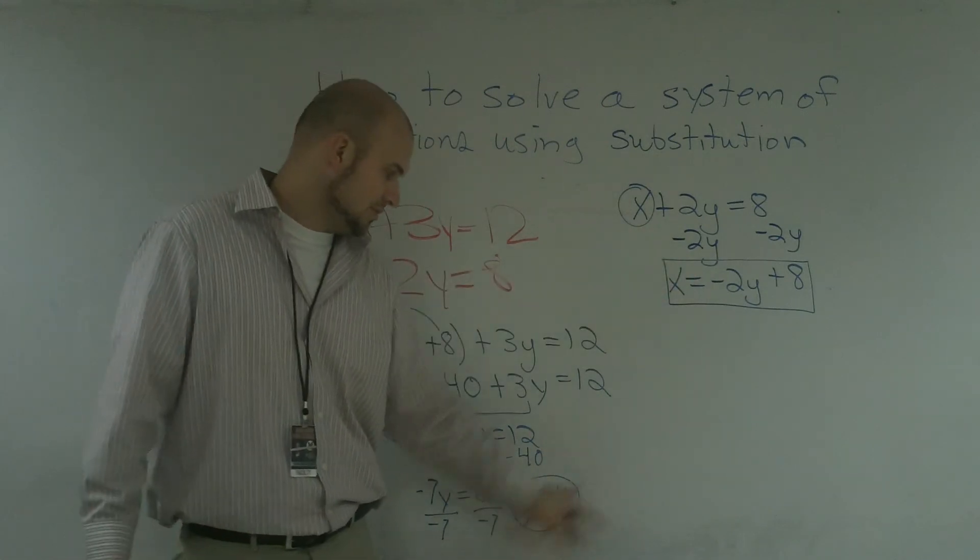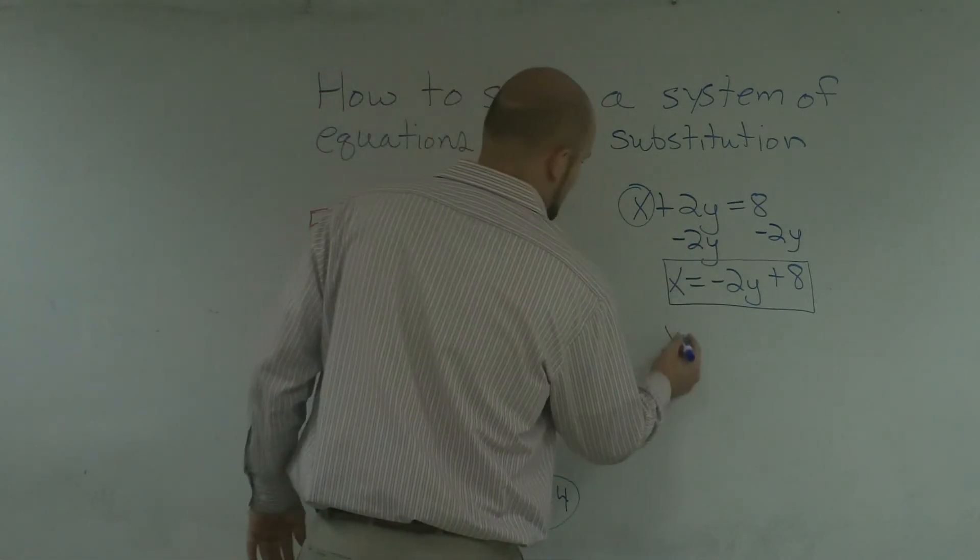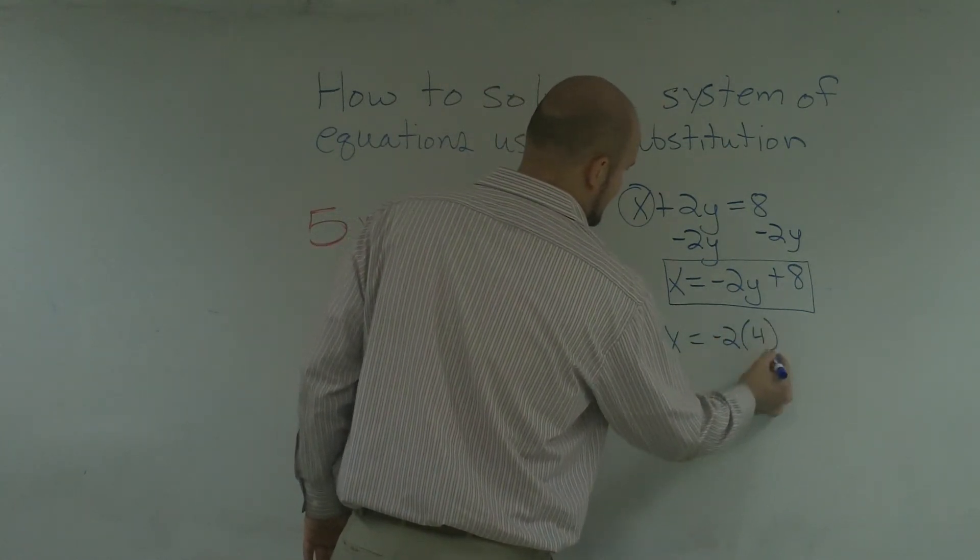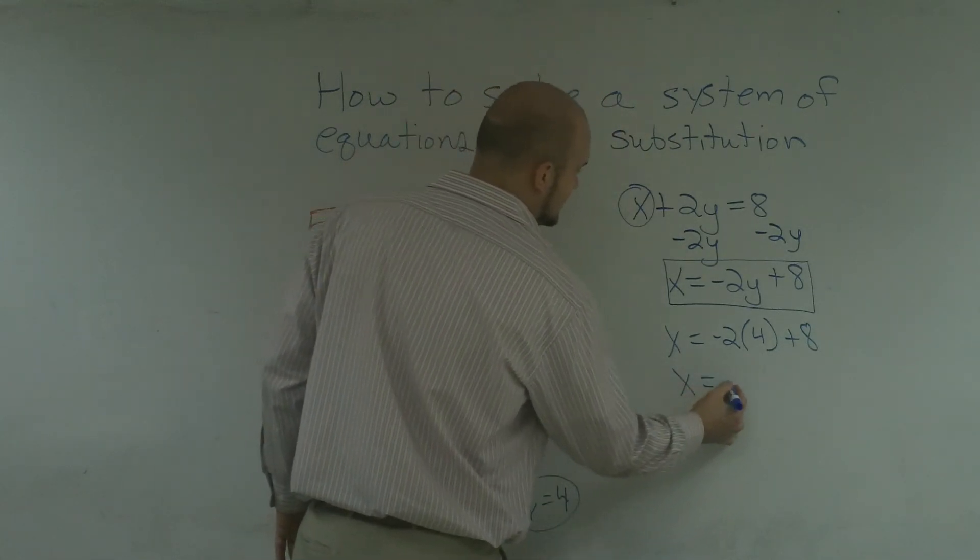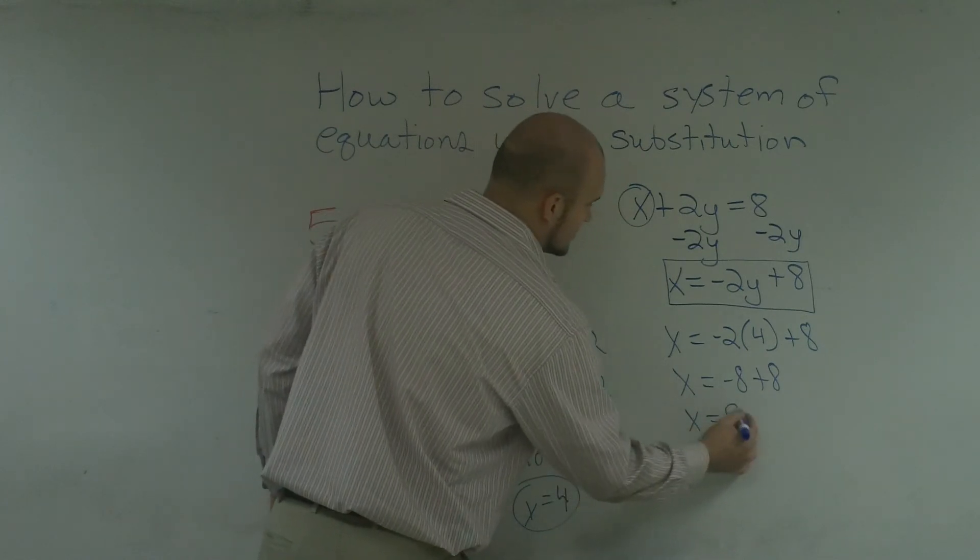Because it's already solved for x, all I have to do is now plug in my y variable into there, and I'll get my answer. So, I say x equals negative 2 times a positive 4 plus 8. x now equals a negative 8 plus 8, x equals 0.